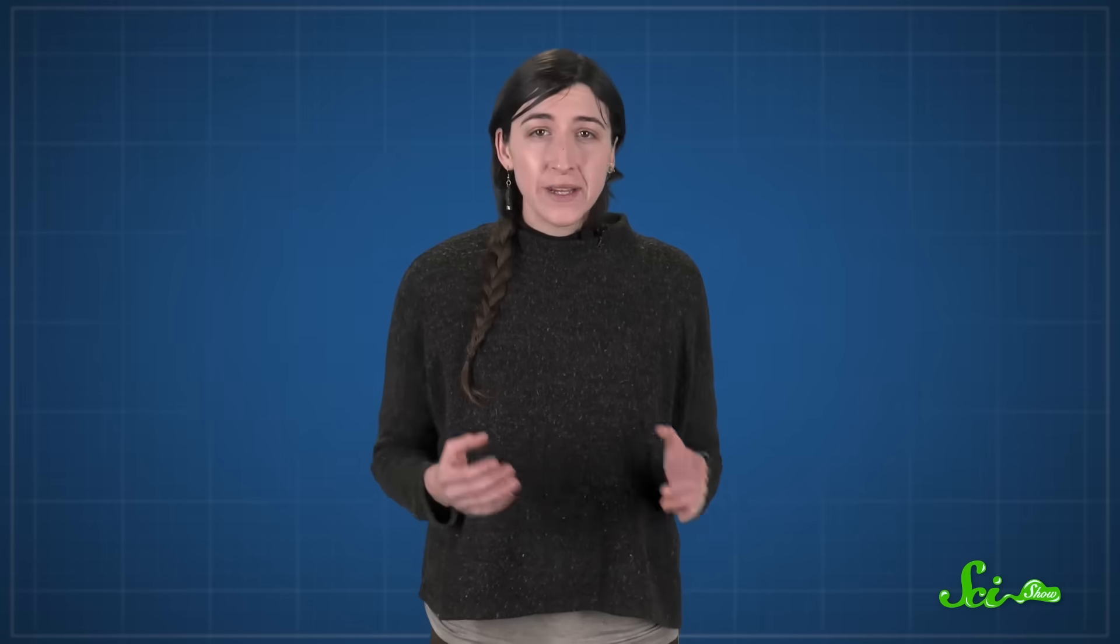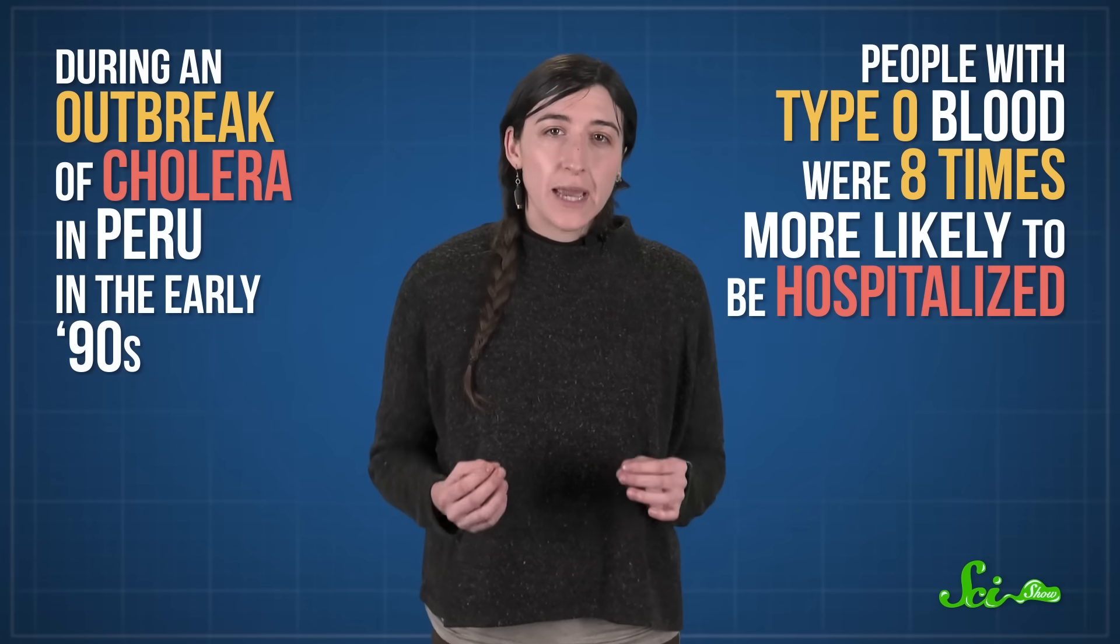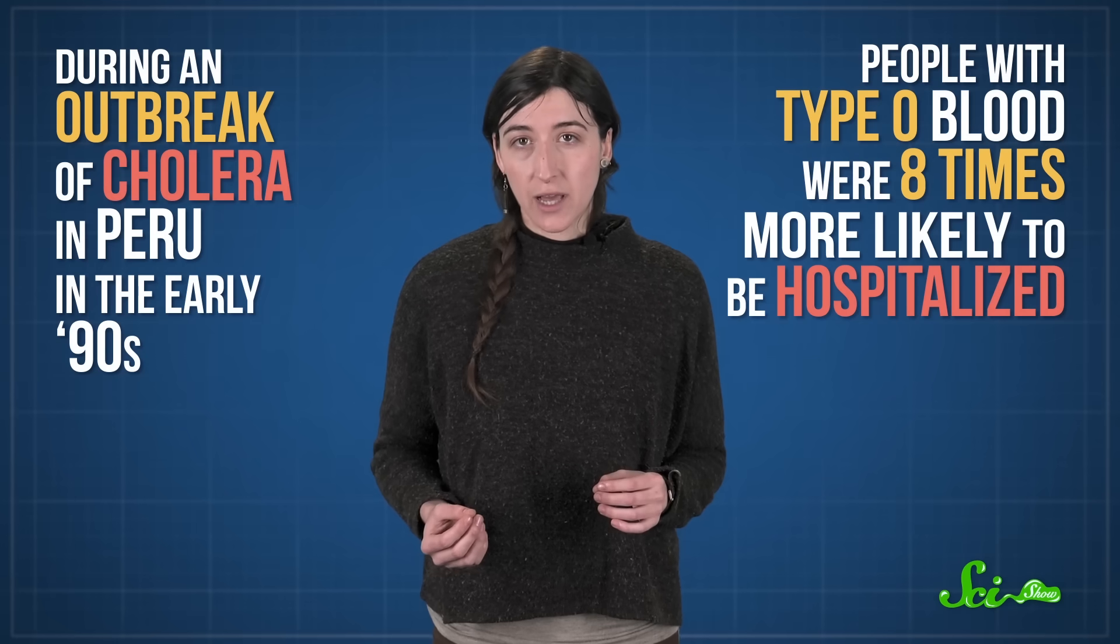But type O has its downsides too. You may fare better with malaria if you're an O, but you'll probably do worse against certain strains of bacteria that cause cholera. During an outbreak of cholera in Peru in the early 90s, people with type O blood were eight times more likely to be hospitalized.